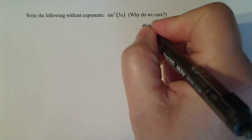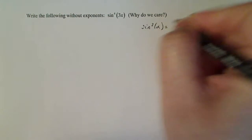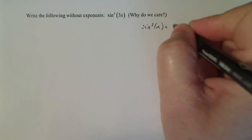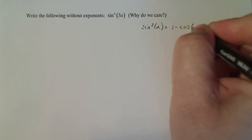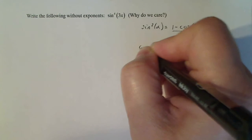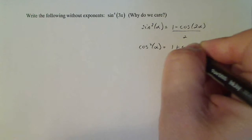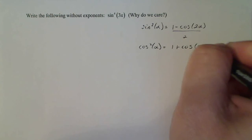Now we're going to use two identities. I'm not going to prove them, but I'm just going to write them down. Sine squared alpha is 1 minus cosine 2 alpha over 2, and cosine squared of alpha is equal to 1 plus cosine 2 alpha over 2.